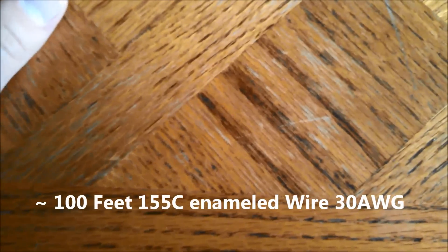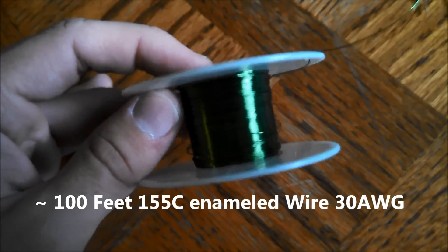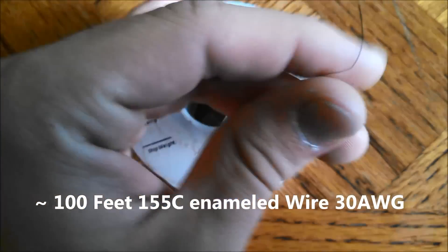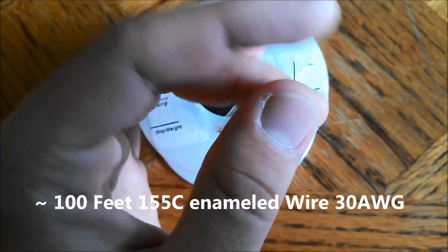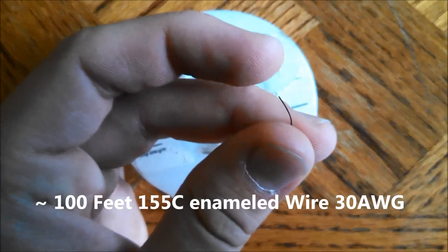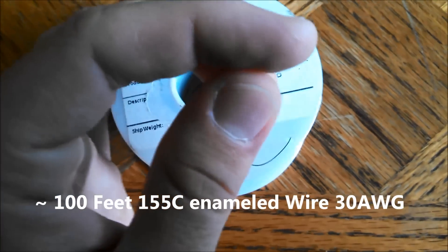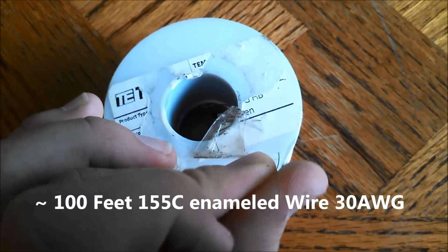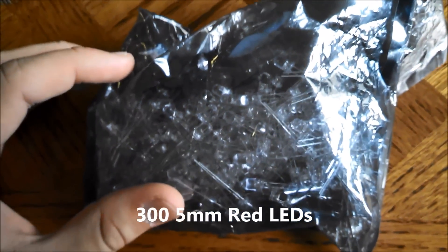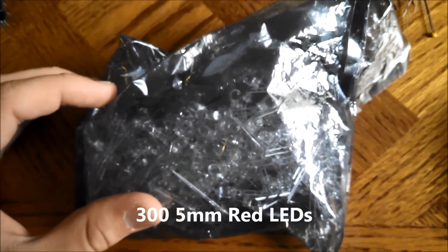You will need about 100 feet of 155 celsius enameled wire. This is 30 wire, or 30 gauge wire here. You will find this stuff on eBay. You will also need around 300 five millimeter red LEDs.